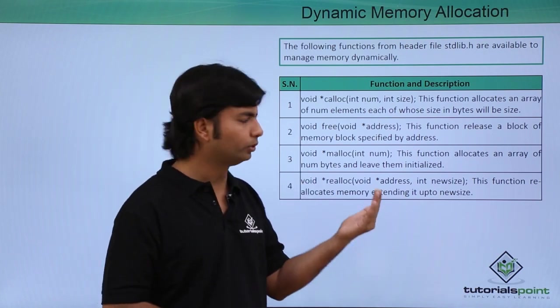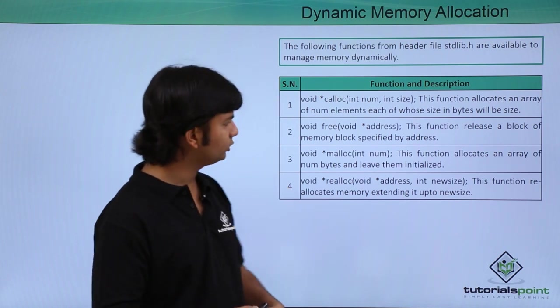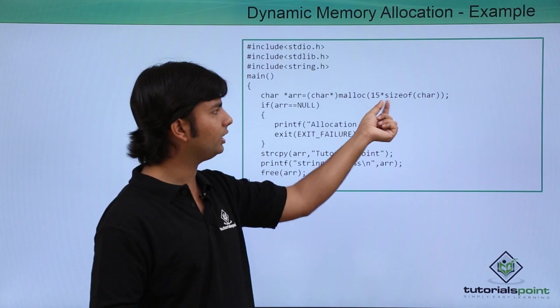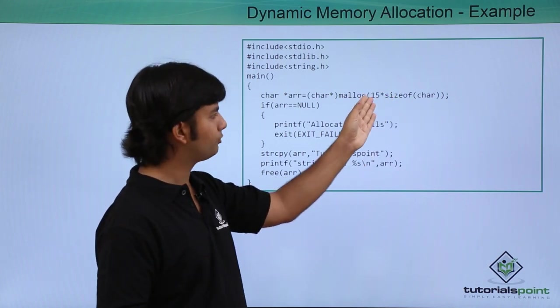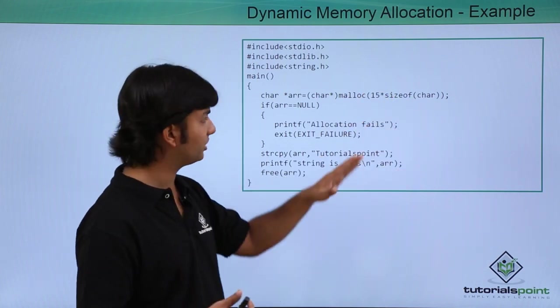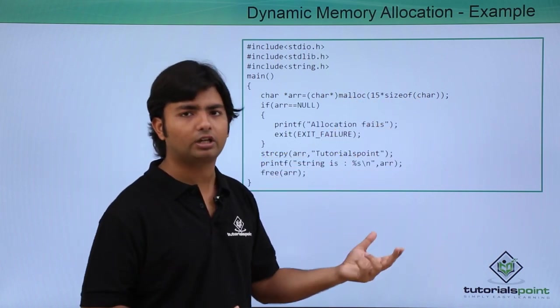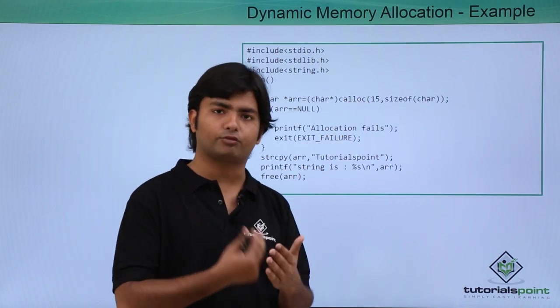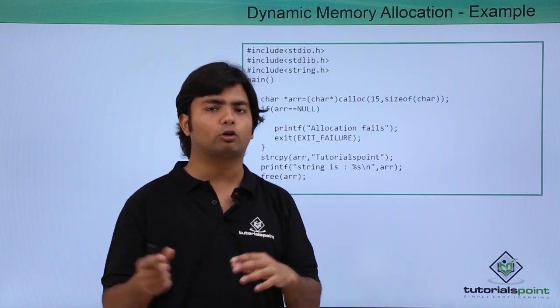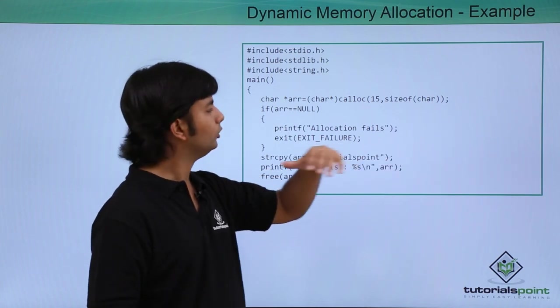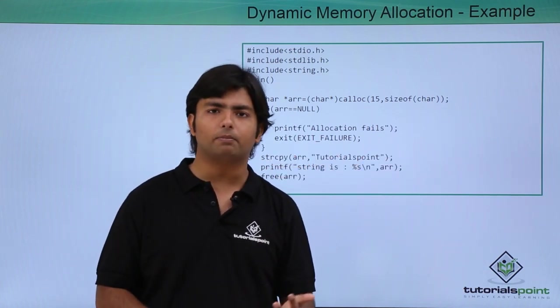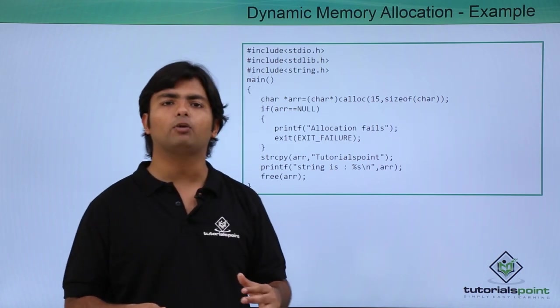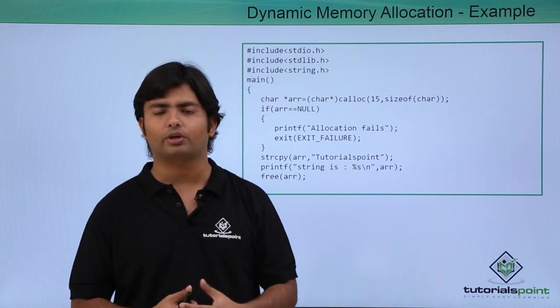Let's look at some examples. With malloc, I pass a single parameter: 15 times sizeof(char), which allocates 15 bytes. With calloc, 15 means I want 15 blocks, and sizeof(char) specifies the size of each block. Ultimately, I'm allocating the same memory, but the method is different. Let's see how to do dynamic memory allocation practically.